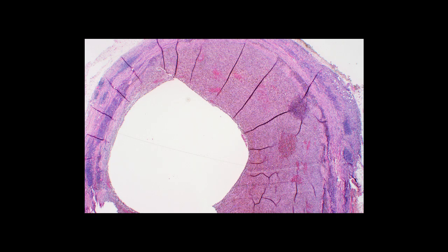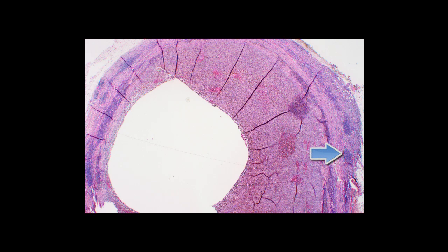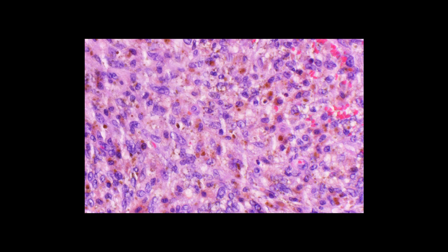Now let me show you two additional examples. Here from low power you can again see the three features: a central cystic space, although the blood is largely washed out of this one; surrounding sheets of histiocytoid tumor cells; and a peripheral lymphocytic cuff, though the pseudocapsule is not quite as pronounced. At high power, these are relatively benign-appearing tumor cells with oval-round nuclei and very vesicular chromatin that really look a lot like histiocytes.